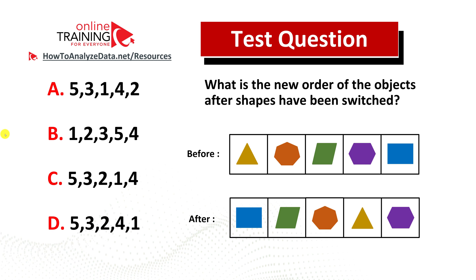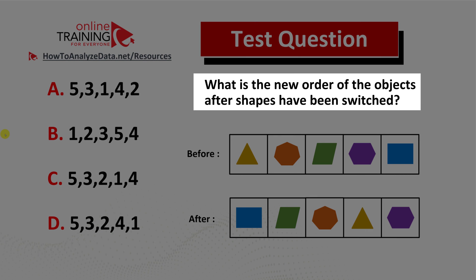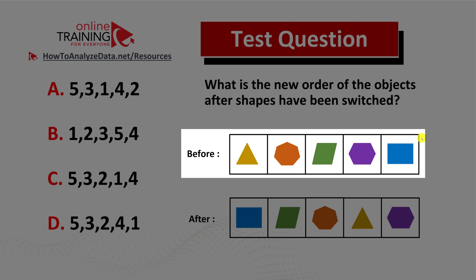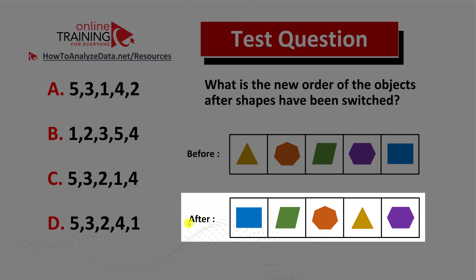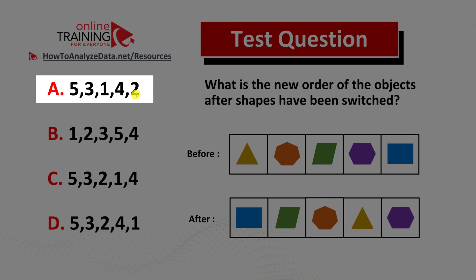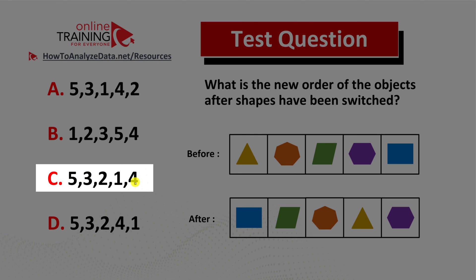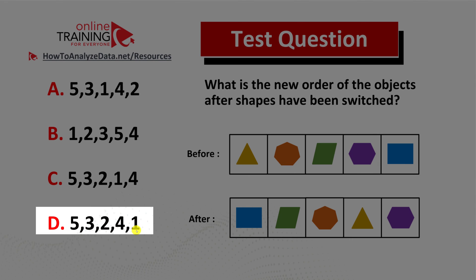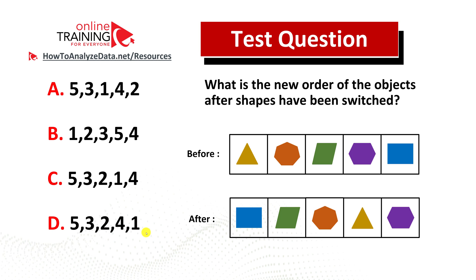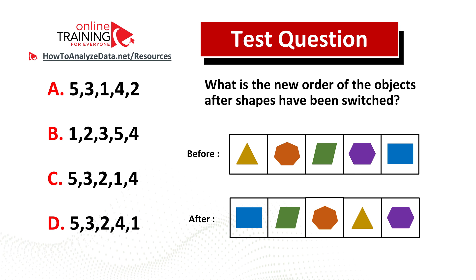Let me share with you an interesting question from the test. What is the new order of the objects after shapes have been switched? You have a before sequence of five shapes and an after sequence, with four different choices: choice A five three one four two, choice B one two three five four, choice C five three two one four, and choice D five three two four one. Now might be a good time to pause this video to see if you can figure out the answer on your own.